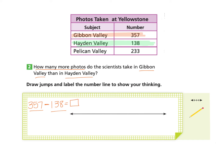The instruction asks us to draw jumps and label the number line to show our thinking. Since we are subtracting, we're going to be moving backwards on the number line. I'll start by writing our biggest number, 357, on the right. Hayden Valley's 138 breaks down as one group of 100, three tens, and eight ones — that's how we'll make our jumps.